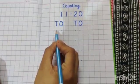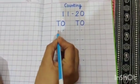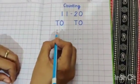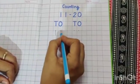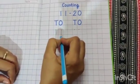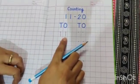First of all, we will make 1, 1, 11. This is 11.